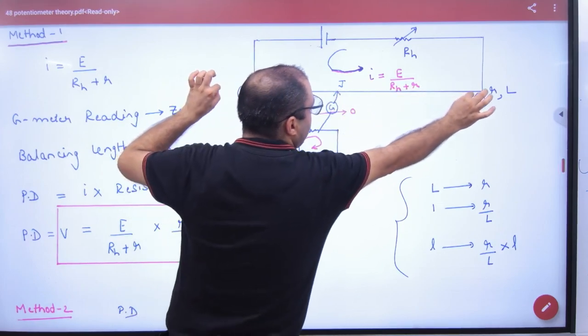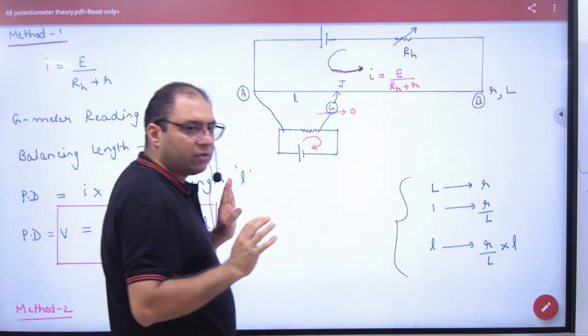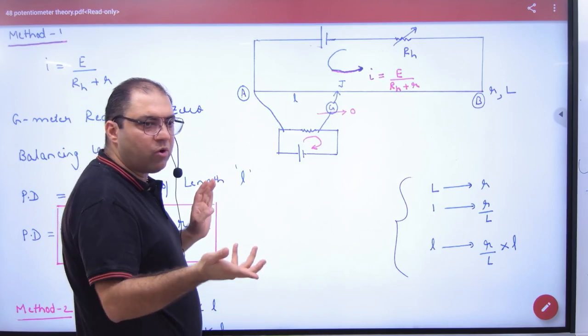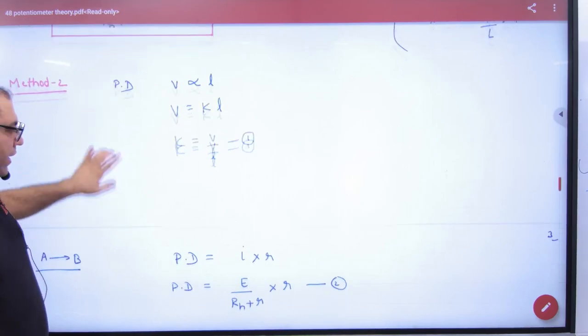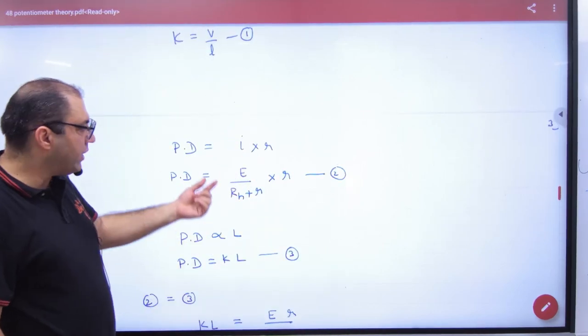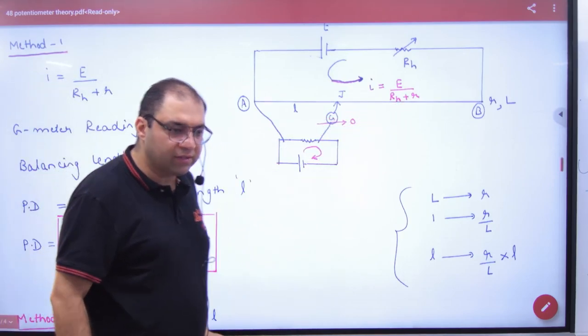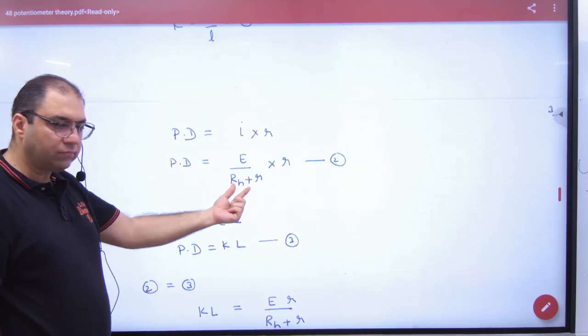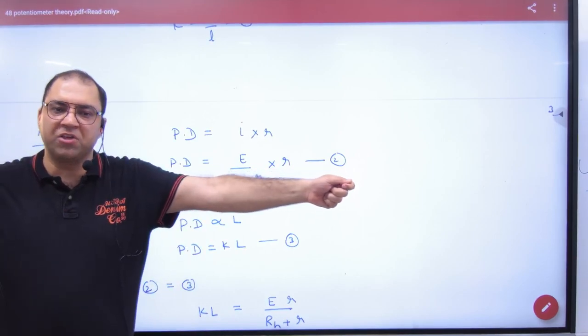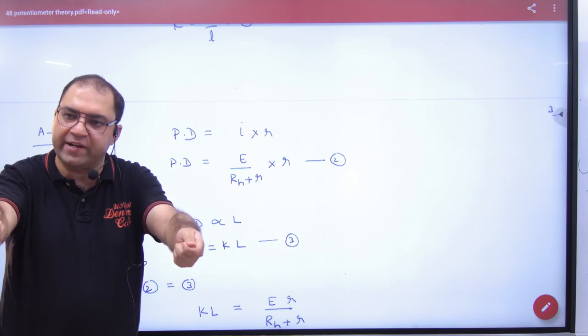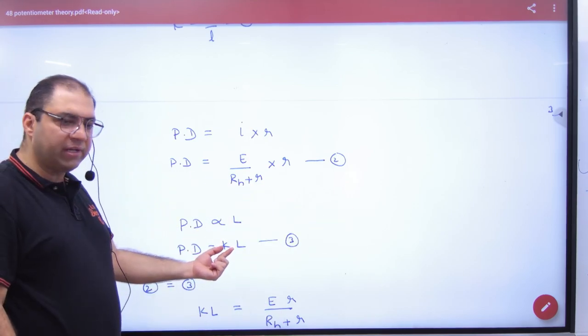Now take the whole potentiometer wire of length L. The potential difference across it is I times r, which equals E divided by (Rh plus R) times r. But according to the principle of potentiometer, the potential difference of the whole wire is K times capital L.